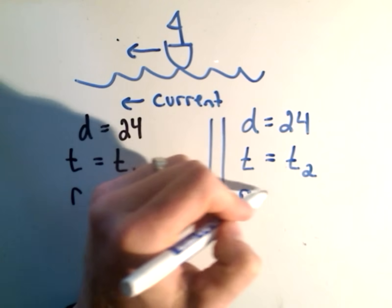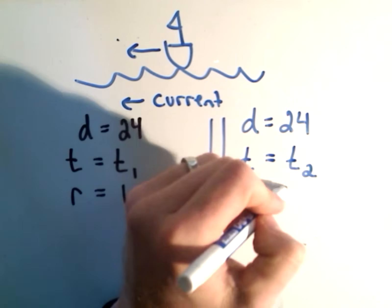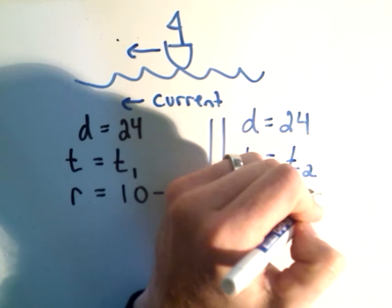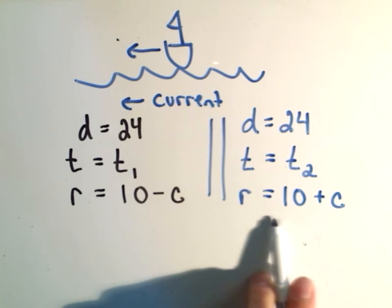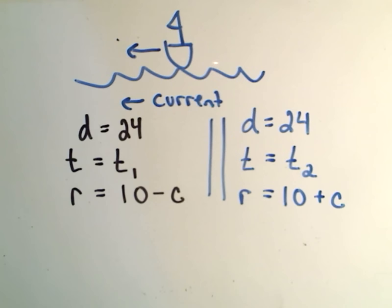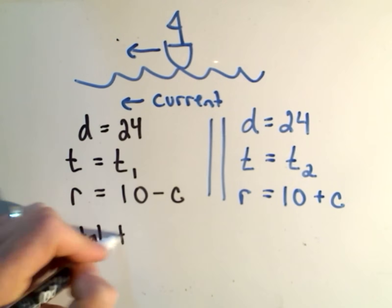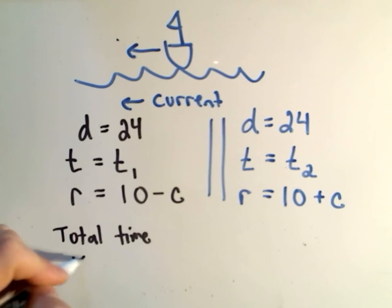And we know that the rate of the boat this time, since it goes 10 miles an hour normally, well, we'll add the speed of the current, because now the current is pushing the boat, so it'll be going faster as it moves left to right. Okay, so what do we know? Well, we know that the total time is 5 hours.